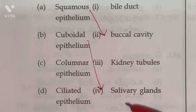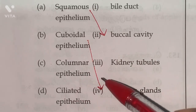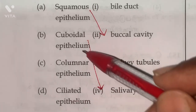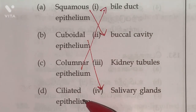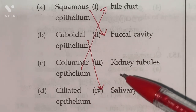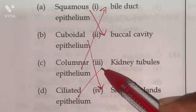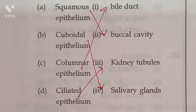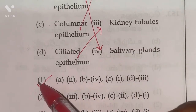Question 156: Among the following, squamous epithelium is present in the buccal cavity; cuboidal epithelium is present in salivary glands; columnar epithelium is present in the bile duct; and ciliated epithelium is present in kidney tubules. According to this, option one is the right answer.